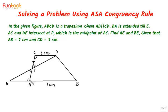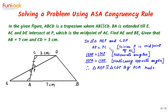Once the two triangles are congruent, we can say by CPCT that AE is equal to CD. In triangles AEP and CDP, we have three sets of corresponding parts equal — two angles and one included side — therefore triangle AEP is congruent to triangle CDP by the ASA rule.